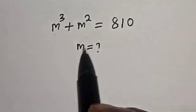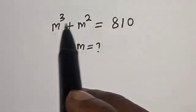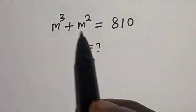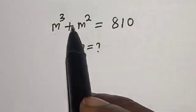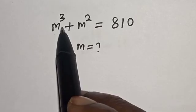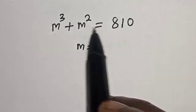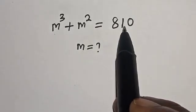Hello, welcome to Magis. In this class we want to find the value of m from this given equation: m cubed plus m squared is equal to 810.